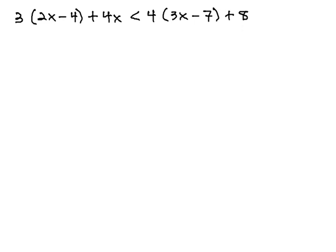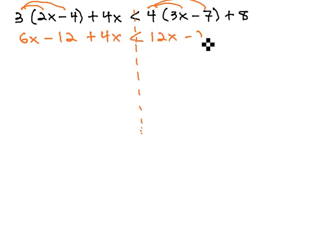If we treat this like any equation, just balancing through the less than sign, we must first start by distributing through parentheses as we simplify each side. This gives us 6x minus 12 plus 4x is less than 12x minus 28 plus 8.